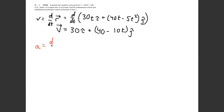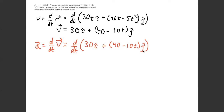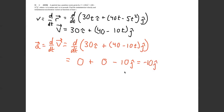The acceleration is just the derivative with respect to time of V. That's d/dt of 30 I hat plus (40 minus 10T) J hat. The derivative of 30 is just 0, and the derivative of 40 minus 10T is just negative 10. So the acceleration is negative 10 J hat.